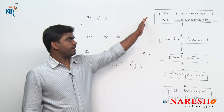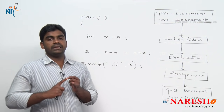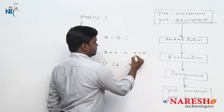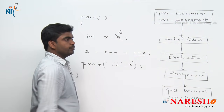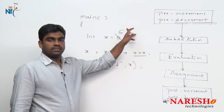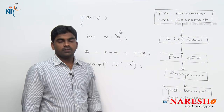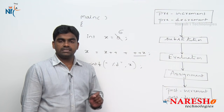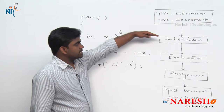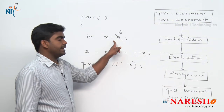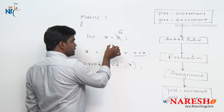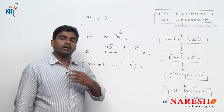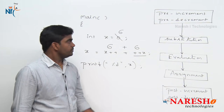How does it execute? Follow the same 5 steps. First step — pre-increment and pre-decrement: only one pre-increment is there, that is ++x. So x value becomes 6. Very important: whenever it is updated to 6, there is no 5 — forget about the 5, it is replaced by 6 in memory. Second step — substitution of values: substitute x value 6 here and 6 here also, not 5.